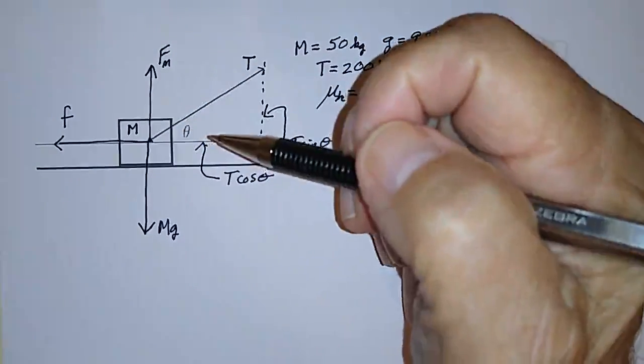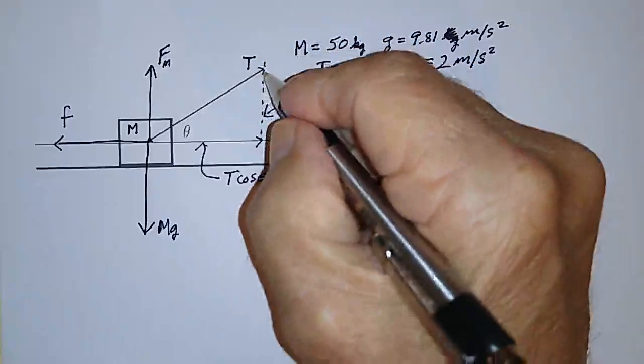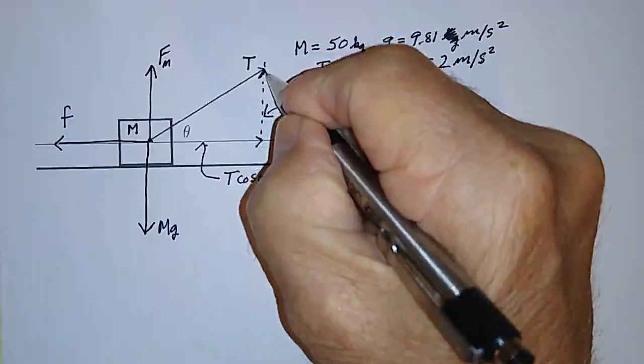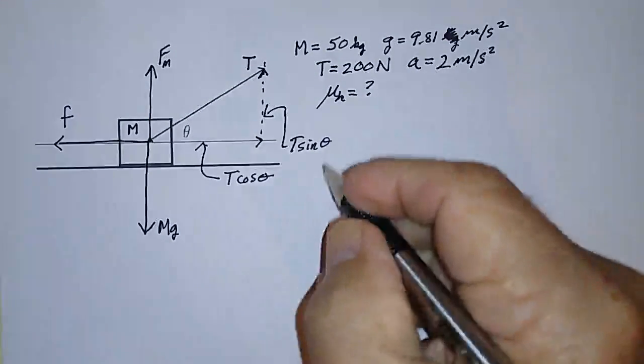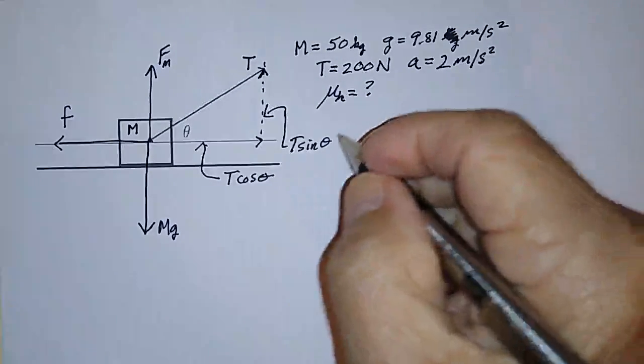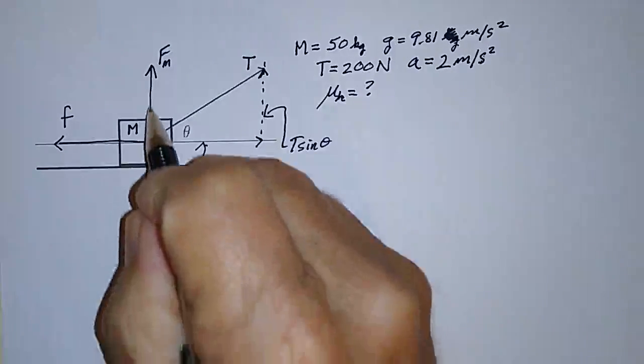So the way to set up the equation is to look at the vertical forces. There are two forces that are acting in the upward direction. There's the normal force of the plane acting on the mass M.